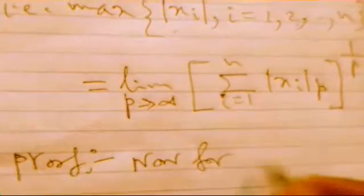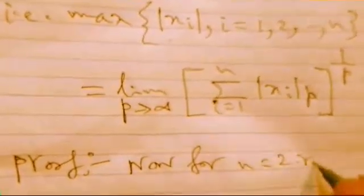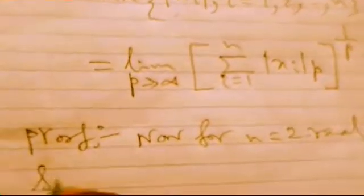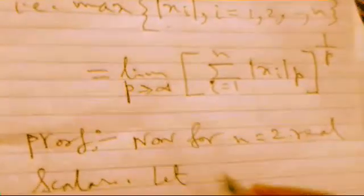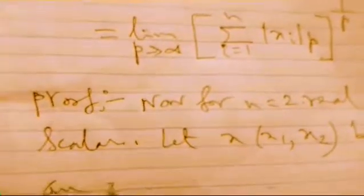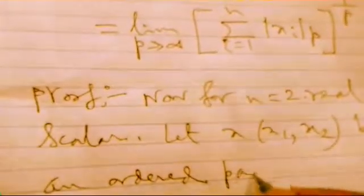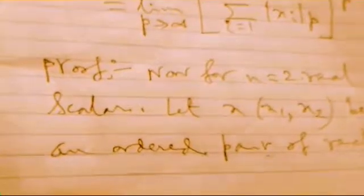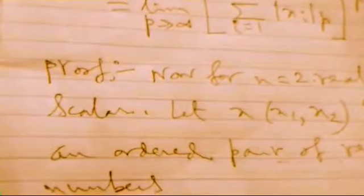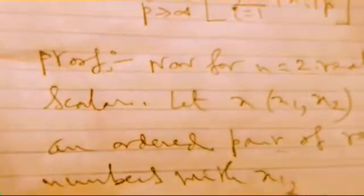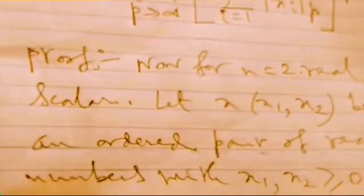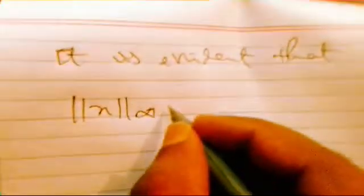For n equals 2, we find real scalars. If we are taking x as (x_1, x_2), an ordered pair in this notation, an ordered pair of real numbers with non-negative real numbers x_1 and x_2 greater than or equal to 0. This is a non-negative structure.